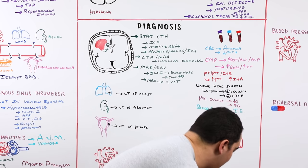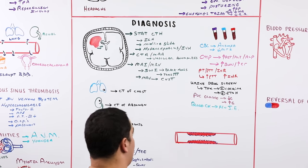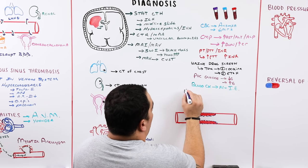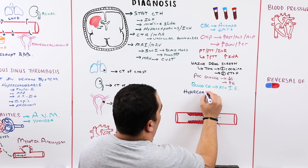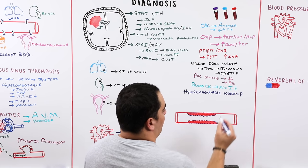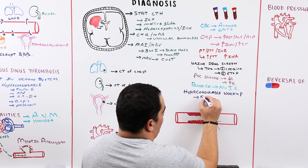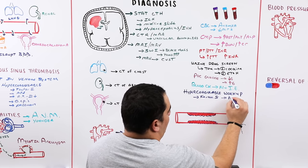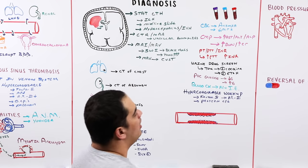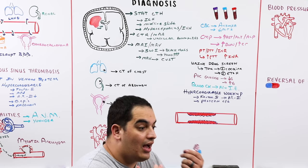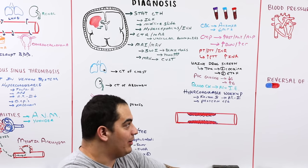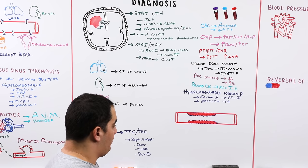A hypercoagulable workup may be beneficial to identify the cause of CVST. This includes checking factor V levels, antithrombin 3 levels, protein C and S, among others, to determine if an underlying hypercoagulable condition caused a DVT in the cerebral venous system.